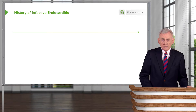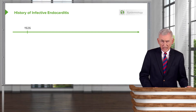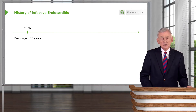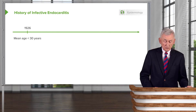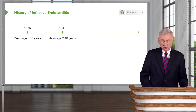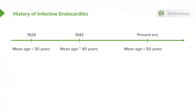It's worthwhile to give an overview of the history of infective endocarditis because it has changed in the era of modern medicine. Back in the 1920s, the mean age of a person getting infective endocarditis was less than 30 years, reflecting congenital heart disease and rheumatic fever. It had moved up to about 40 years of age in the 1940s, but in the present era, the mean age is over 50 years of age.